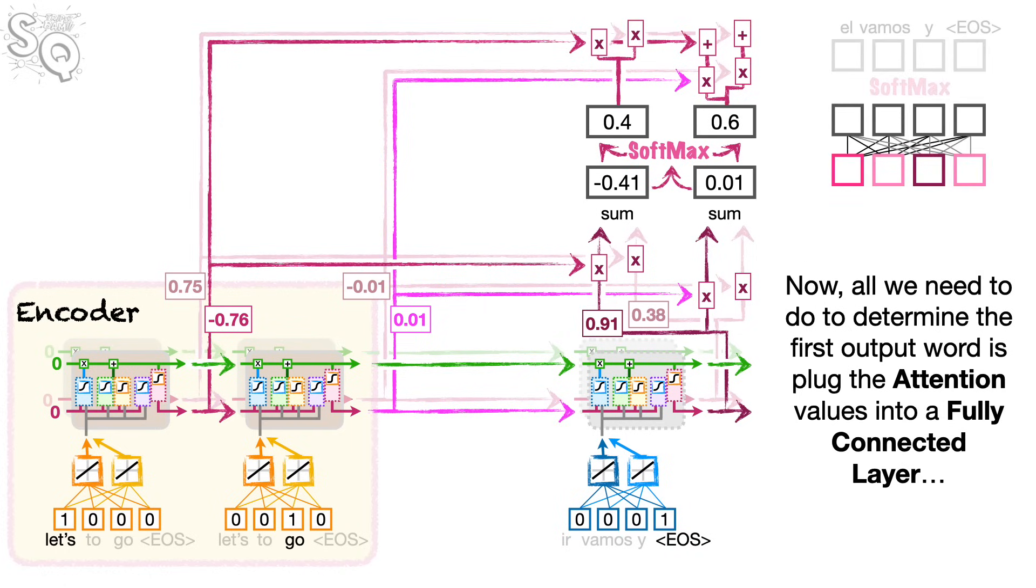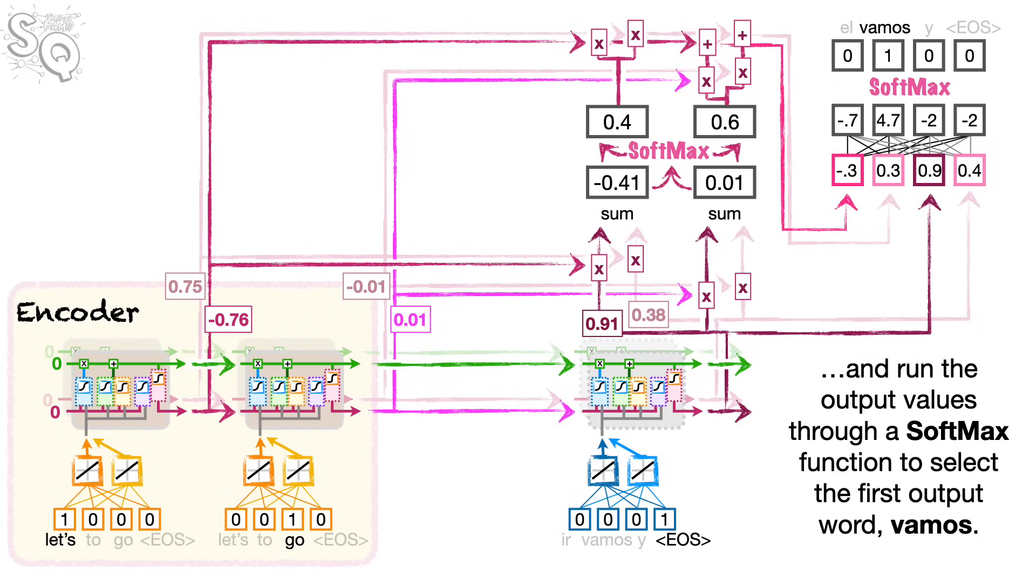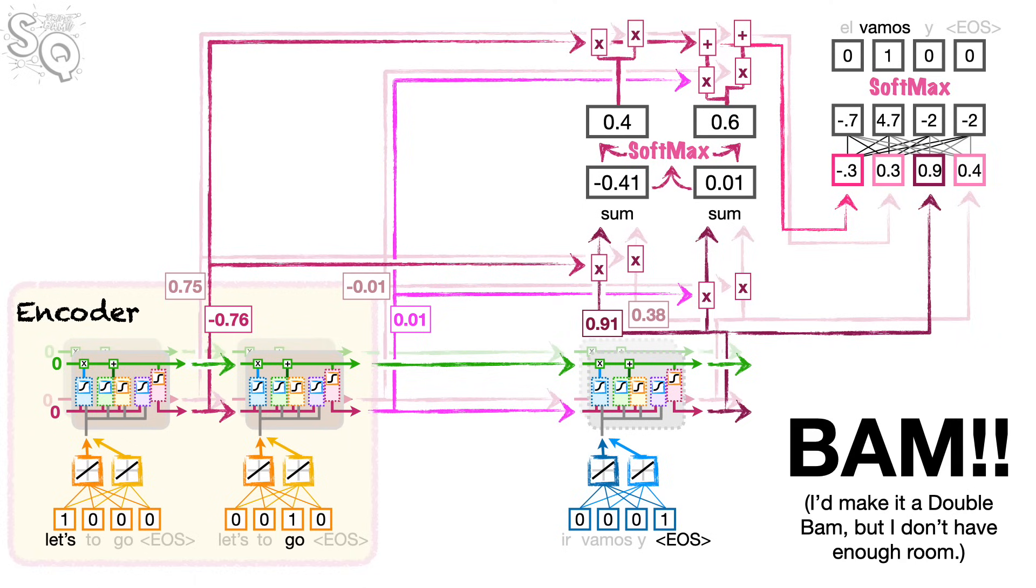Now, all we need to do to determine the first output word is plug the attention values into a fully connected layer. And plug the encodings for EOS into the same fully connected layer. And do the math. And run the output values through a softmax function to select the first output word, VAMOS. BAM!